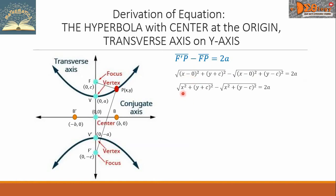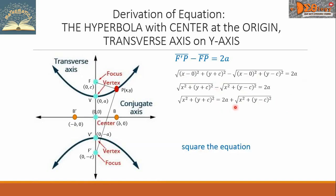Now let us try to eliminate the radicals. First, let us transpose the second radical to the right side — from negative it becomes positive. Then we square both sides of the equation. When we square the left side, the radical sign is cancelled, leaving the radicand. The right side is the square of two terms: 4A², plus 4A times the remaining radical, plus the square of that radical.